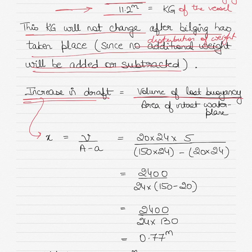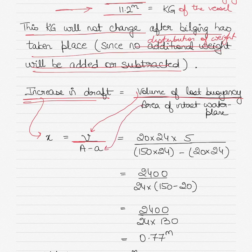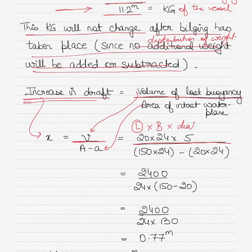If you don't know where these formulas are coming from, please watch my previous video on bilging. The increase in draft x is equal to the volume of lost buoyancy V divided by the area of the intact water plane — which is the area of the water plane before bilging minus the area of the bilged compartment. The volume of lost buoyancy is the length of the bilged compartment (20 meters) multiplied by the breadth of the vessel multiplied by the old draft.